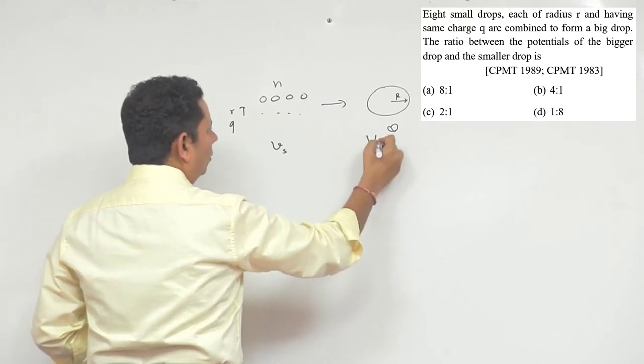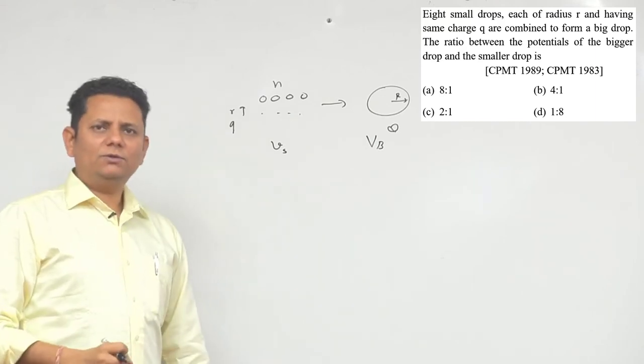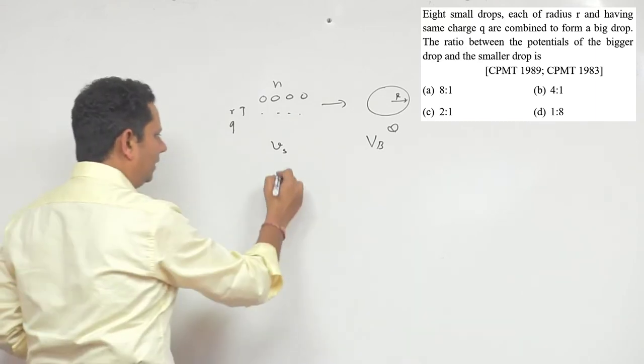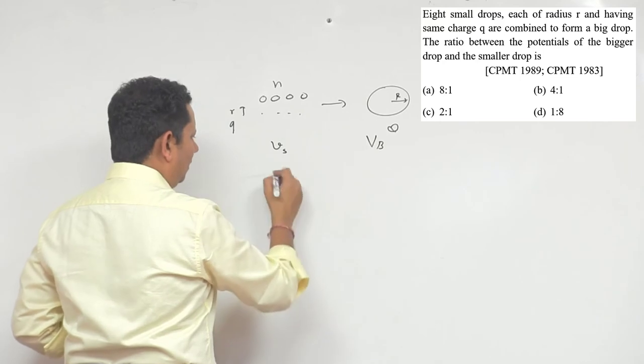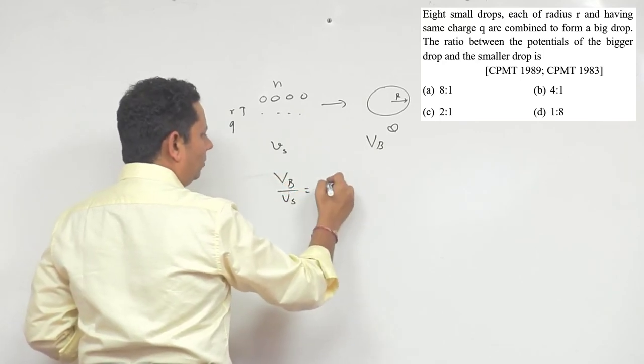We need the ratio between V_small and V_big. We can use a direct formula here, which is derived in theory. The potential of big drop divided by potential of small drop equals n to the power 2/3.